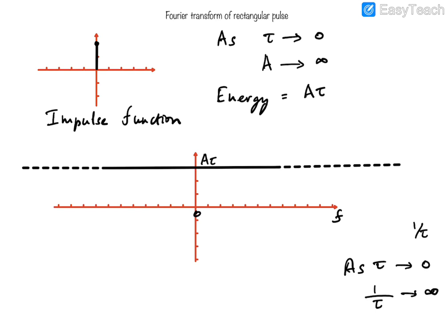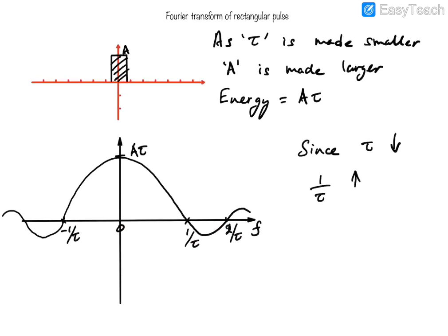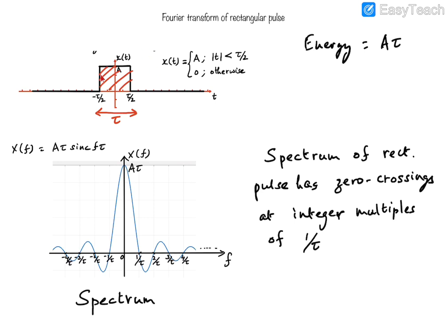The Fourier transform or spectrum of the impulse function is a constant, and that constant value is equal to the energy of the impulse, which is A·tau. In this video we have seen the spectrum of the rectangular pulse of a certain width while keeping its energy constant, and what we notice is that as we make the pulse width narrower and narrower, its spectrum becomes wider and wider — its bandwidth keeps growing. This reflects the fact that time and frequency domains have an inverse relationship: anything compressed in time will expand in the frequency domain and vice versa.